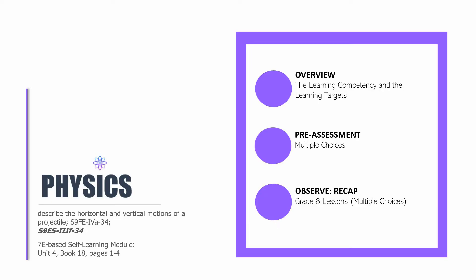Hello and welcome back to the Knowledge Catalog. This is Physics, and welcome to the fourth quarter of Science 9. For this edition of Physics, we will be having the following learning competency, which is describing the horizontal and vertical motions of a projectile. For this quarter, we are no longer going to use the Learner's Module. Instead, we will be using the 7E-based self-learning module, which I specifically developed for this course. So if you want to follow through, you need to have a copy of it and open it in Unit 4, Book 18, pages 1 to 4.